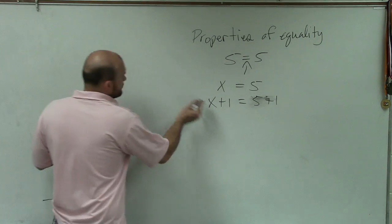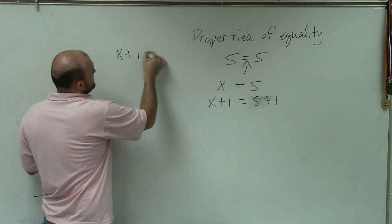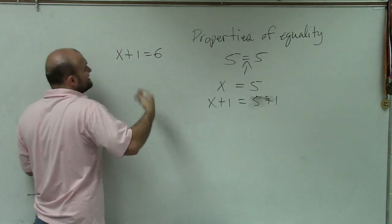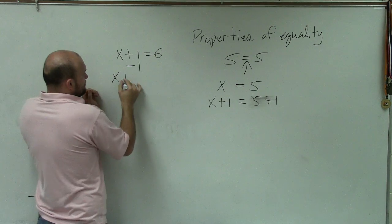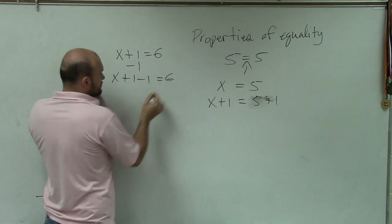So for instance, rather than having a problem like this, let's say I had a problem like this. And I say I need to get this variable by itself, so I use the inverse operation, right? So it's x plus 1 minus 1 equals 6. Well, think about this.